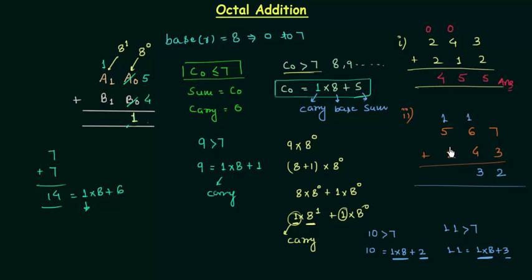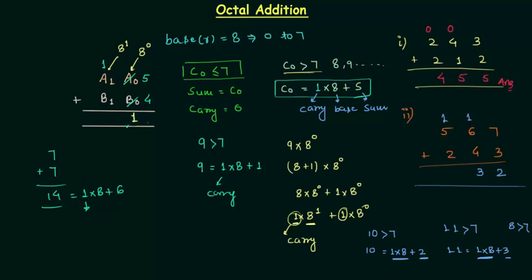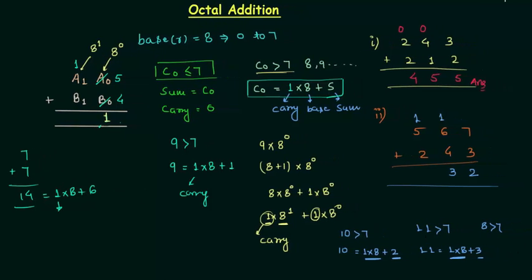Breaking 11: 1, 1 gives carry 1 and sum 3. Now 1 plus 5 is 6, and 6 plus 2 is 8. This one is interesting — we have 8, and 8 is also greater than 7. So we break 8: 8 equals 1 multiplied by 8 plus 0, so 0 is the sum and 1 is the carry. In this final position we only have 1, so sum is 1. The answer is 1, 0, 3, 2.